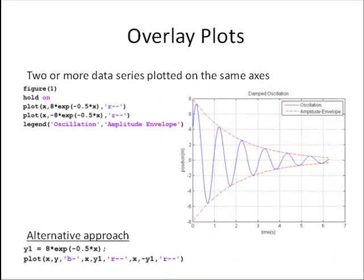First, we'll look at overlay plots. An overlay plot is when we have two or more data series plotted on the same axis. So here we're looking at that same damped oscillation that I showed earlier. And in order to add, what we're doing here is adding that red dashed line, these two red dashed lines, which represent the amplitude of the oscillation. And in order to do that, we can use the hold command.